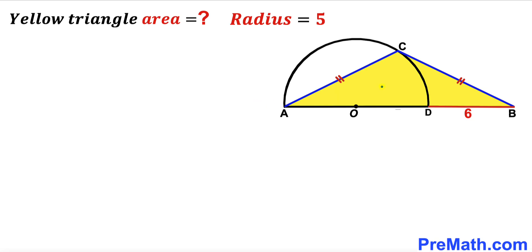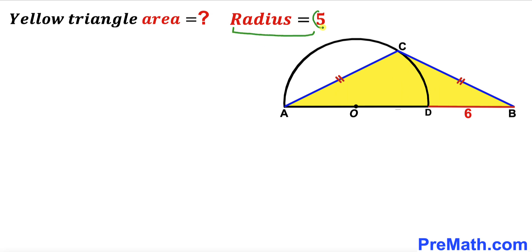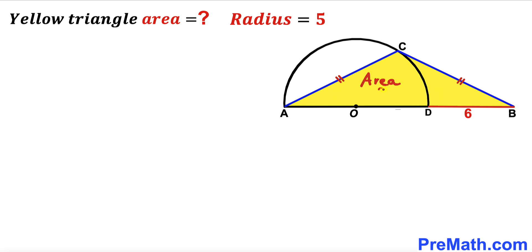Welcome to PreMath. In this video we have an isosceles triangle ABC and a semicircle with center O put together, such that segment BD is 6 units and the radius of the semicircle is 5 units. Furthermore, length AC equals side length BC. Our task is to calculate the area of the yellow shaded triangle ABC.